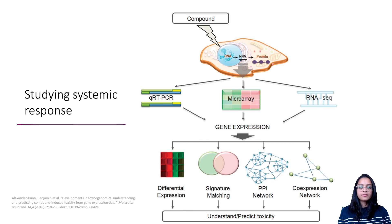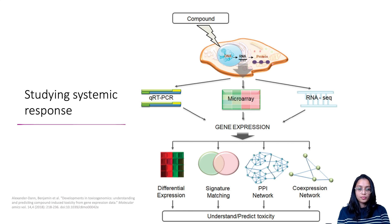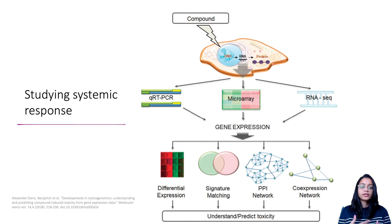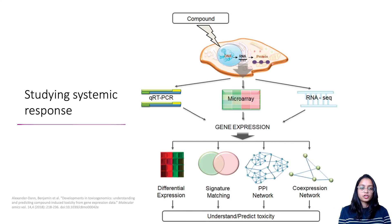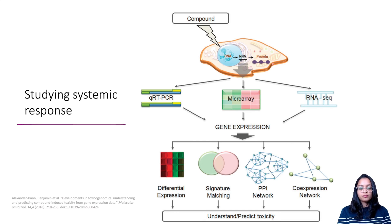To study the changes in a cell in response to therapy, there are various levels: one can study the system-level response at the genomics level, the transcriptomics level, or the proteomics level. Talking about the transcriptomic response, there are various methods used to quantify it — qRT-PCR, microarray, and RNA-seq — and basically they measure gene expression in a cell, giving us a gene expression matrix.